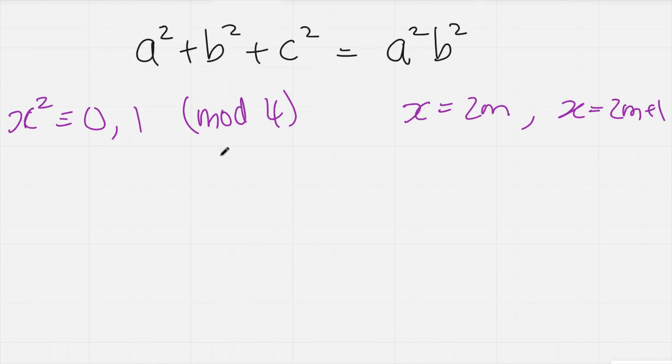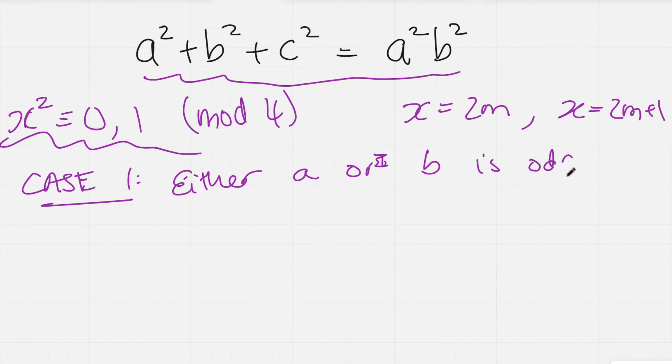Anyway, we're going to use this fact, and we're also going to use the fact that when we stare at this equation, we see that there's a bit of symmetry—there's a symmetry between a and b. We can swap the roles of a and b and the equation doesn't change. So using that symmetry and the fact that square numbers are either 0 or 1, we can look at this into two different cases. So case 1 is going to be when either a or b is odd.